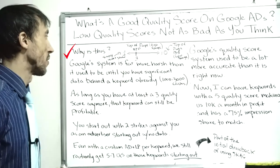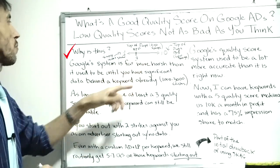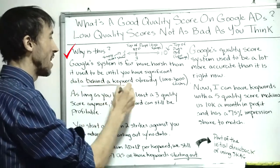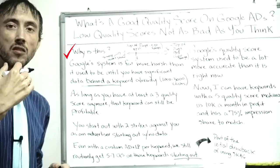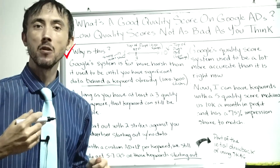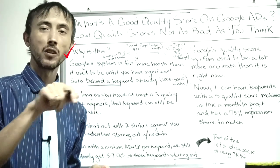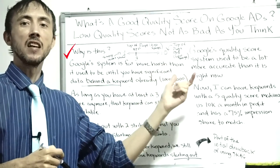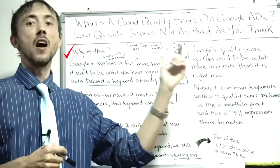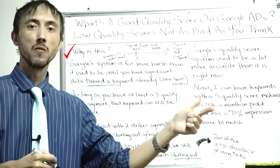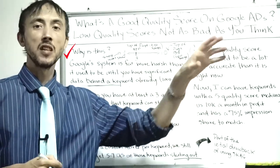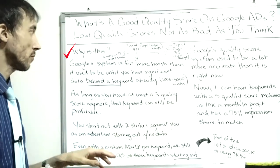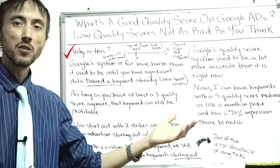I drew a little chart to explain how this works. Google's system is far more harsh than it used to be with quality scores until you have enough significant data for them to definitively know that you spent the time to set up a really good ad and a really good landing page. Starting out at five, you need at least one thousand to three thousand clicks on that particular keyword before Google gives you the benefit of the doubt and moves you toward a seven, eight, nine, or ten quality score.